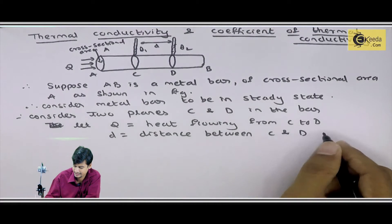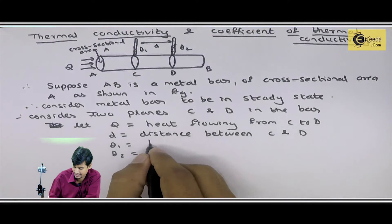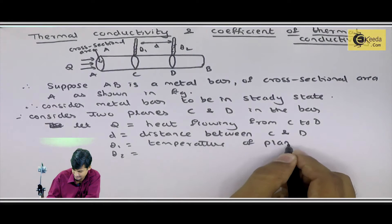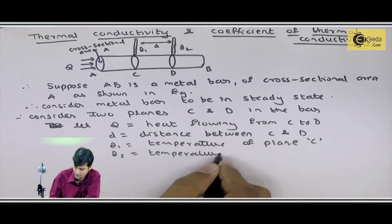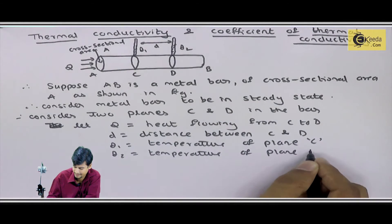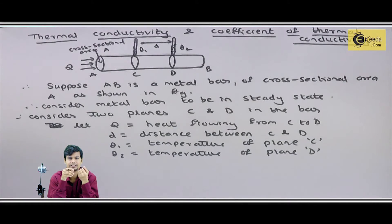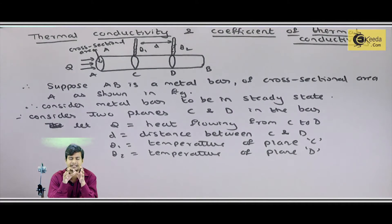The distance between C and D is measured. Theta 1 is the temperature of plane C, and theta 2 is the temperature of plane D. So now we know Q, D, C, and what to measure with the thermometer. We need to find the temperature at different planes using the thermometer and then determine the connection between the heat produced and these measurements.